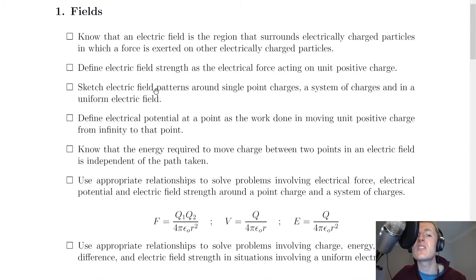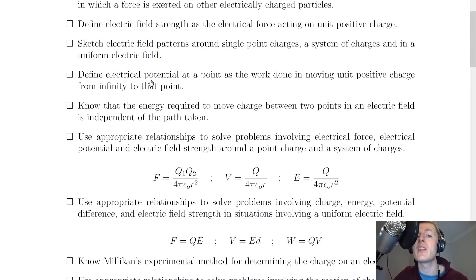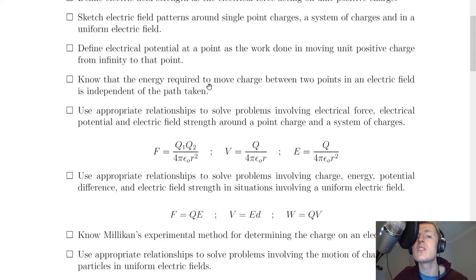You should be able to sketch electric field patterns around single point charges, a system of charges, and in a uniform electric field — that just means between two parallel plates. Next you need to be able to define electrical potential at a point as the work done in moving unit positive charge from infinity to that point. You also need to know that the energy required to move charge between two points in an electric field is independent of the path taken.